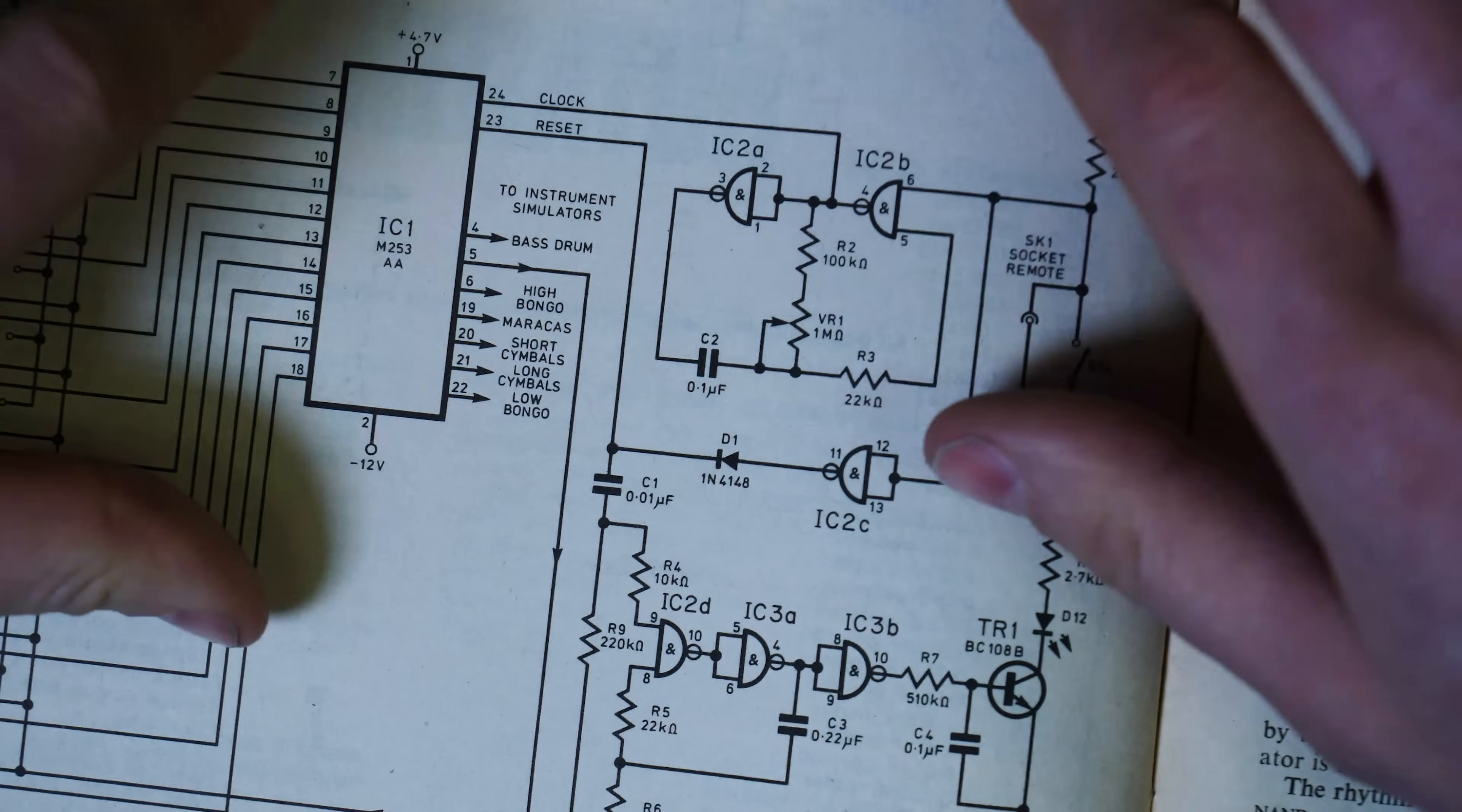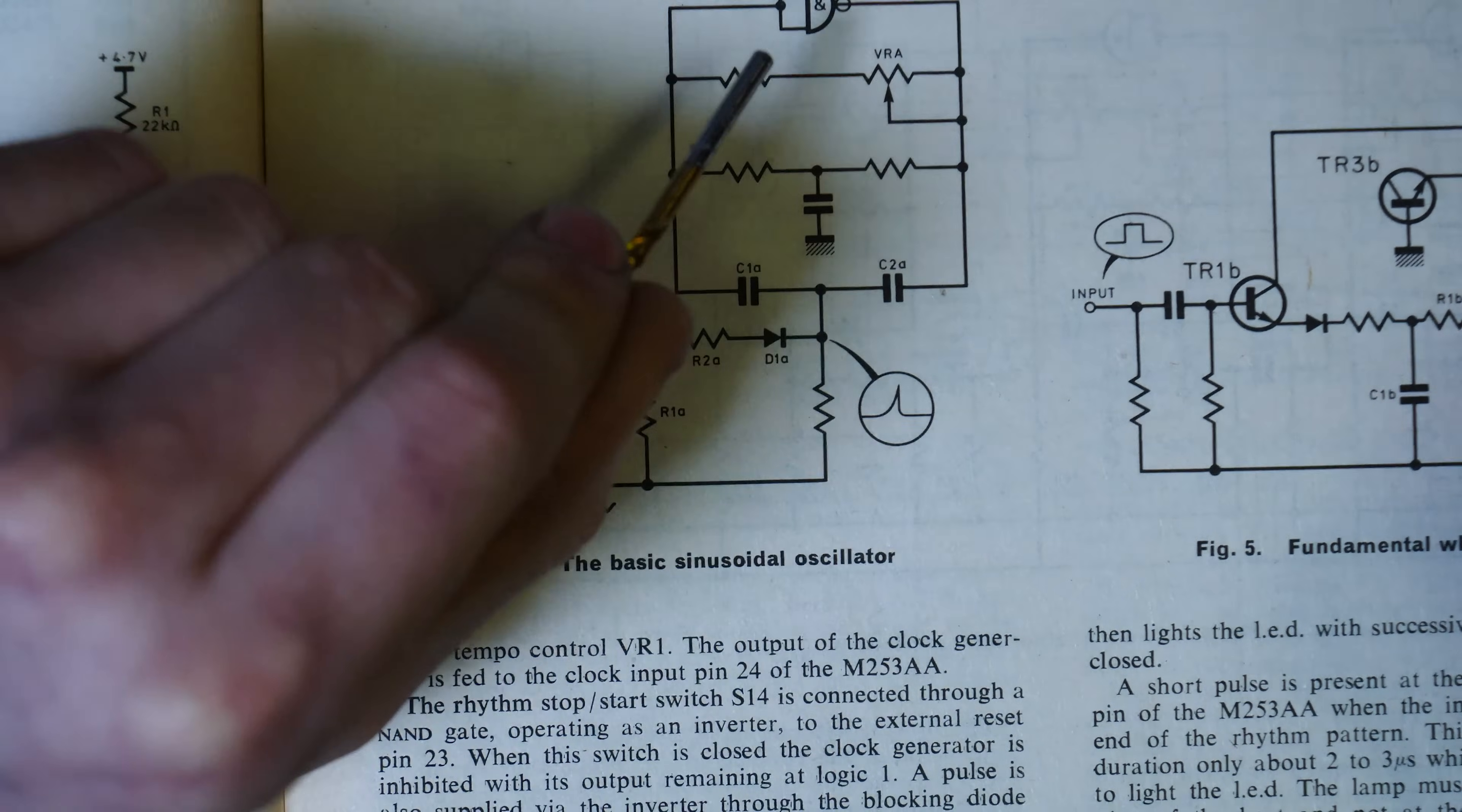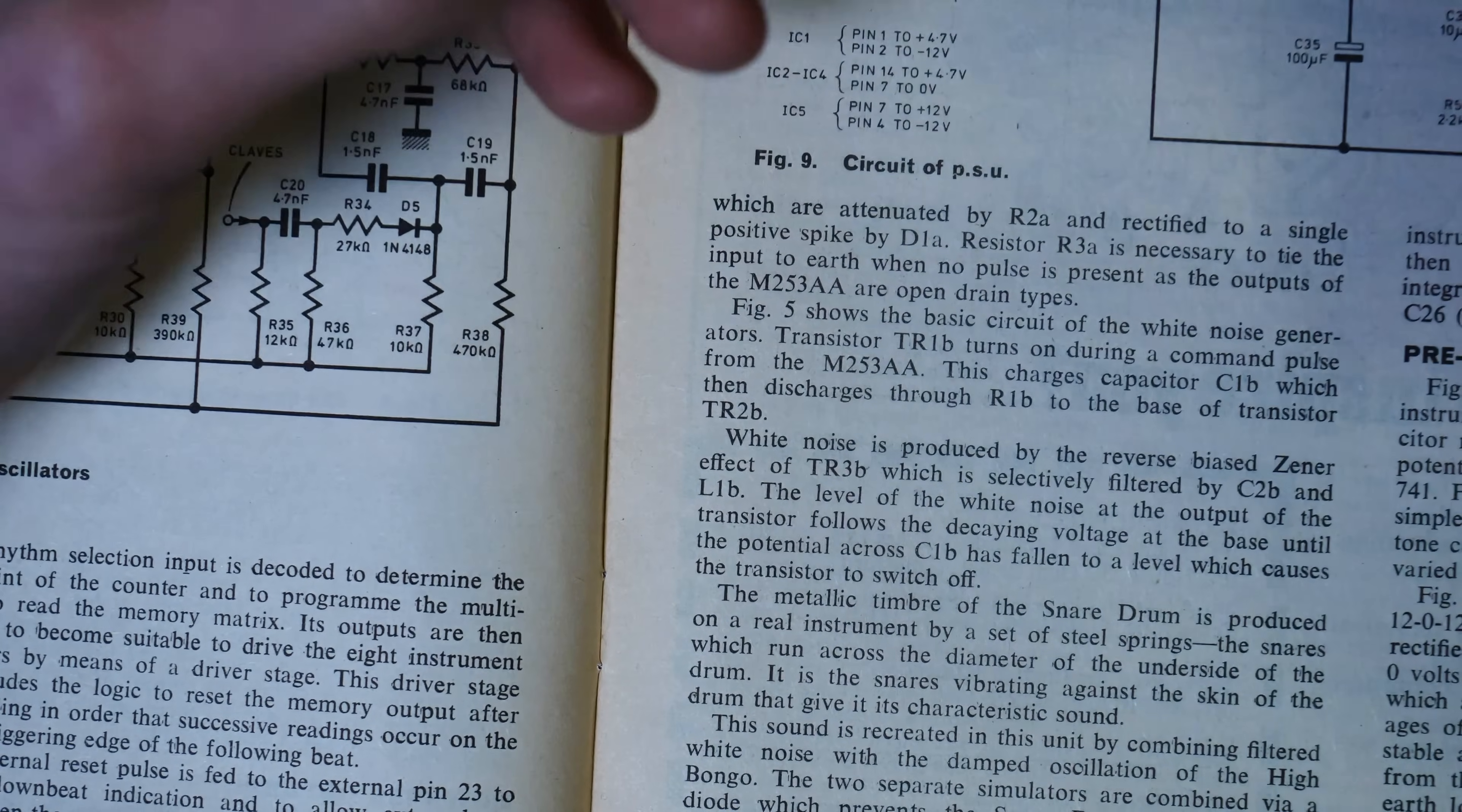VRA regulates the decay of the oscillation and should be adjusted to give the most realistic effect. The pulsing output of the M253AA is a square wave, and this is differentiated by C3A and R1A into two opposite spikes. Basically, the M253 sequencer sends out quite a big old chunky square wave. It's got to be turned into a trigger voltage. And this is where this comes in. So this is where the pulse input goes in. And this whole circuit brings it into a nice and neat trigger pulse.